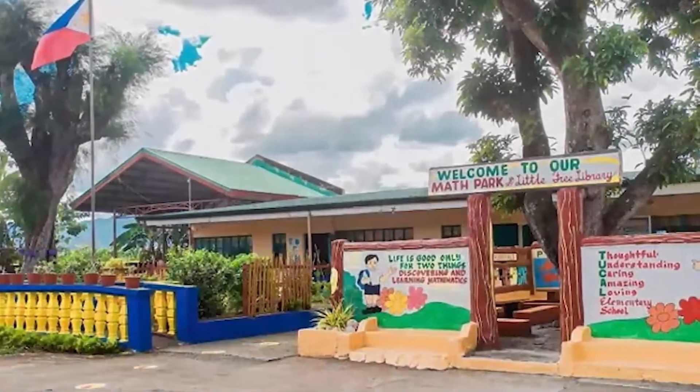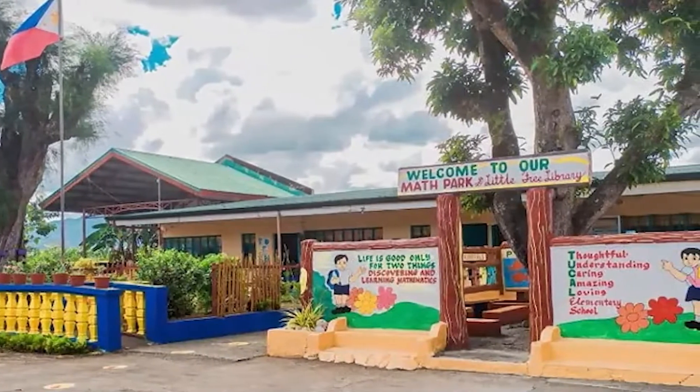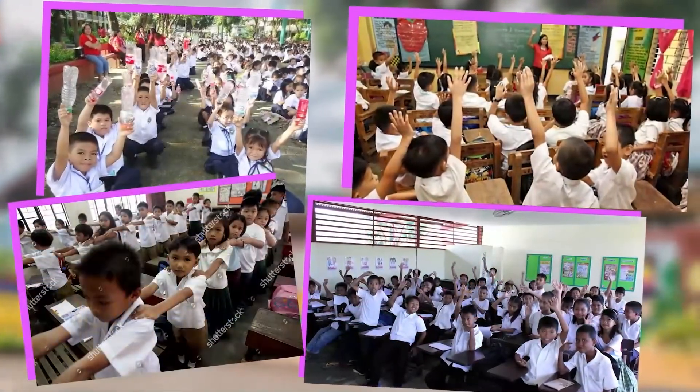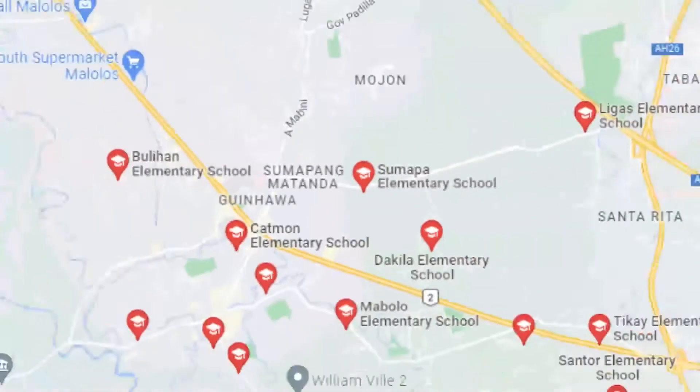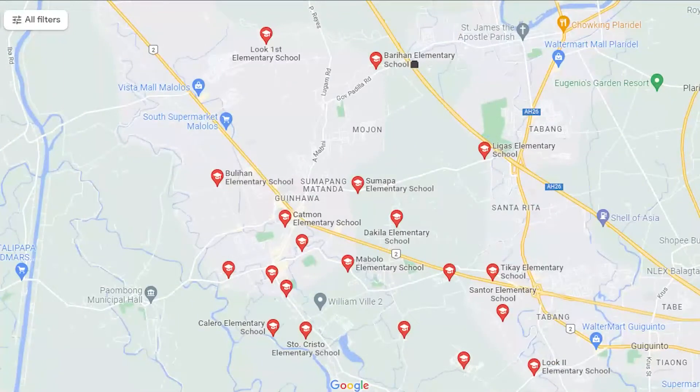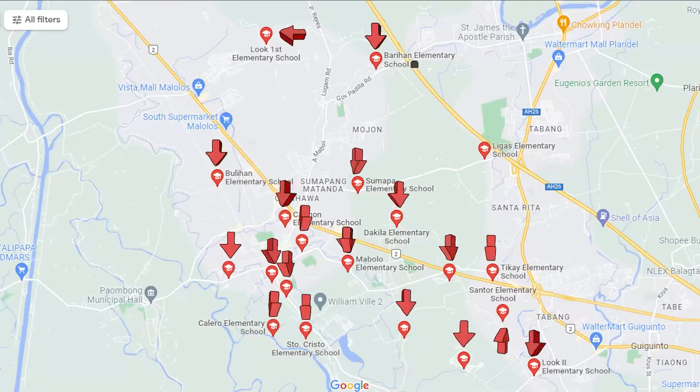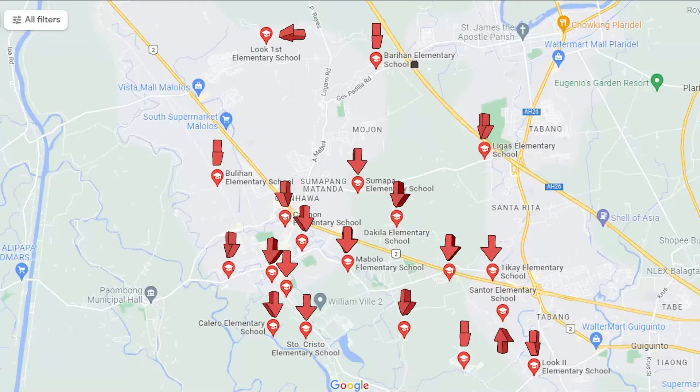All of us would never forget how fun are elementary days. It was the time we built our childhood memories with friends and classmates. Here in Malolos, Bulacan, there are lots of elementary schools. In our research, we picked 20 elementary schools to find out what is the shortest path from one school to the other. To possibly find it, graph theory made it easier by the help of Dijkstra's algorithm.